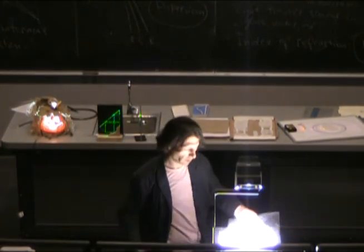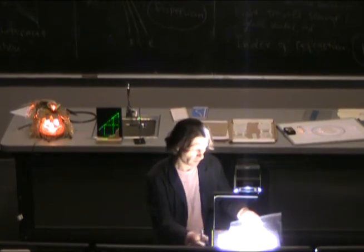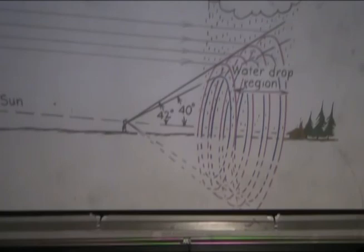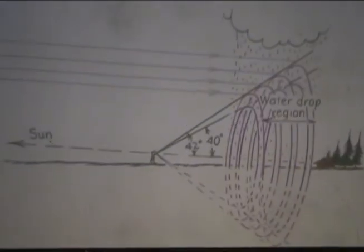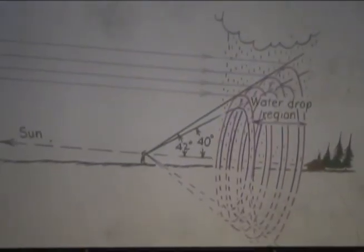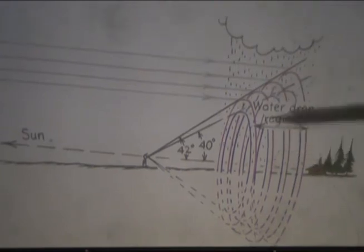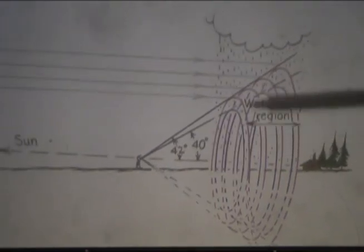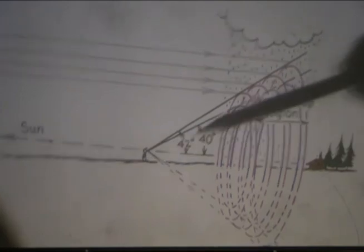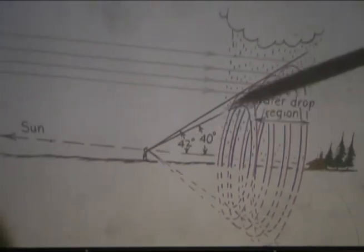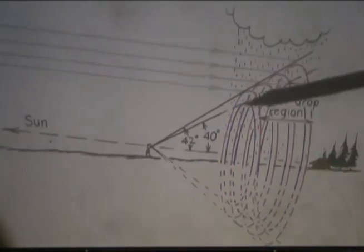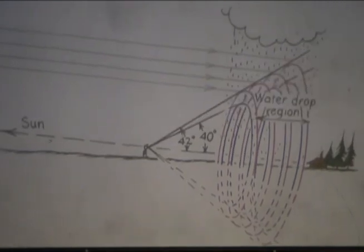That's why it's a nice round surface. So this is the reason you see this rainbow. So these are all the points that are selected by the requirement that the angle between the direction to the sun and the direction to you is the same and is equal to 40 degrees, 42 degrees.